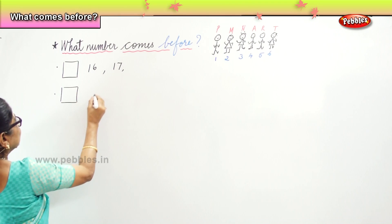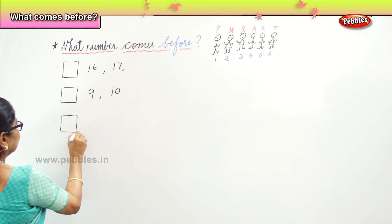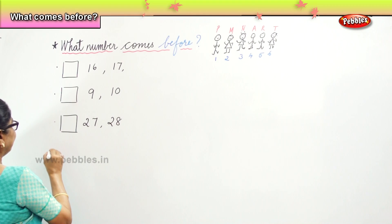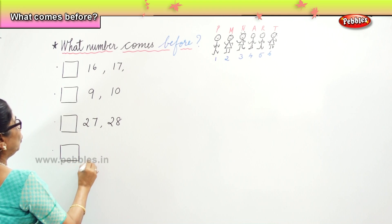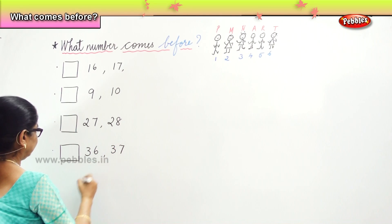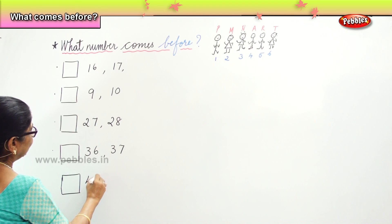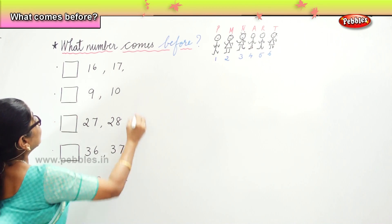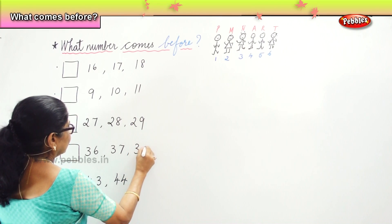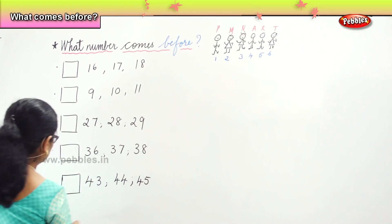Next: 16, 17, 18, 19, 20. You are going to fill in, okay? Next: 43, 44, one more.